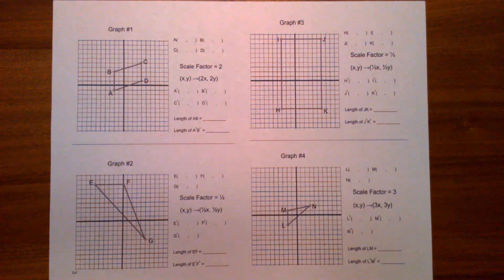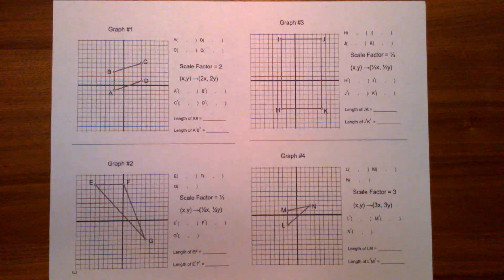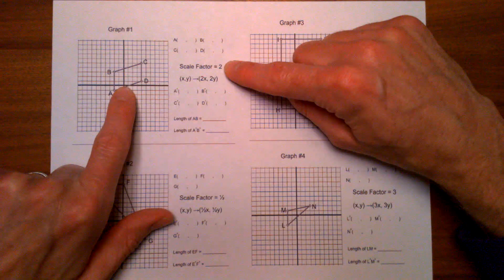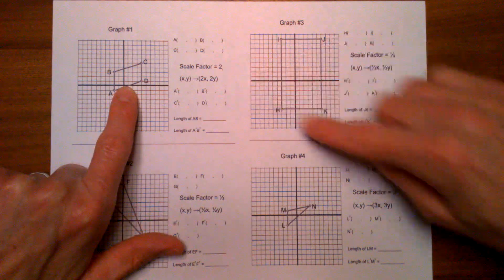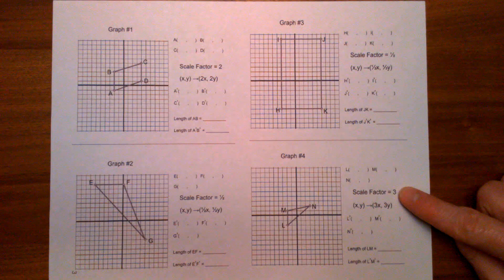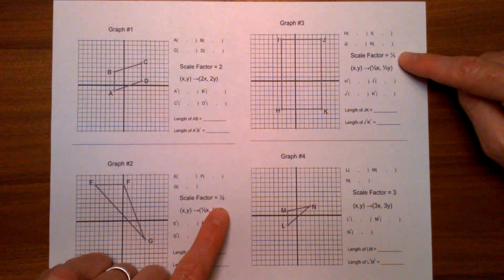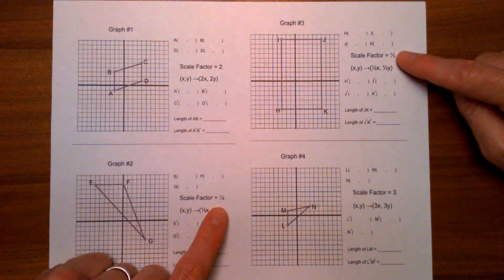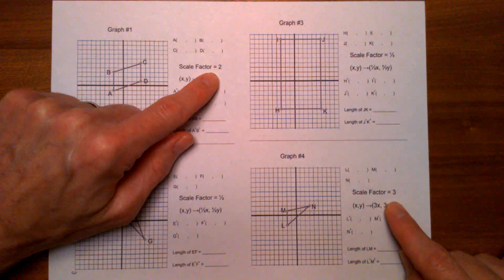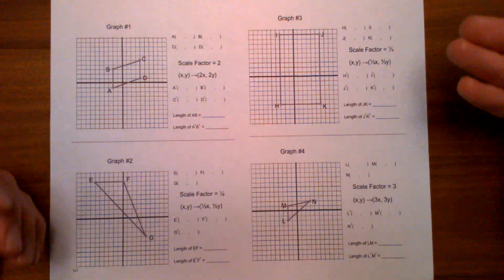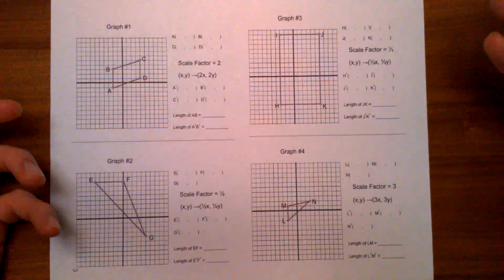For each dilation there's going to be a scale factor, and the scale factor is what we multiply by to change the size of these shapes. Multiplying by a scale factor will either make the sides grow in length or shrink. If the scale factor is greater than one, the numbers are going to grow — a scale factor of two means lengths double, a scale factor of three means they triple. If the scale factor is less than one, the side lengths shrink. A scale factor of one would be boring — it keeps everything the same.